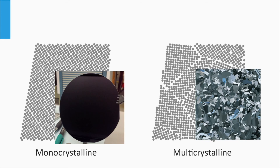Here you see two pictures of monocrystalline and multicrystalline wafers. The monocrystalline silicon wafer has one uniform color, whereas in multicrystalline silicon the various grains are clearly visible to the human eye. At the grain boundaries, we find lattice mismatches, and as a result many defects reside there. Consequently, the lifetime of charge carriers in polycrystalline silicon is shorter than in monocrystalline silicon due to Shockley-Read-Hall recombination. The more grain boundaries in the material, the shorter the lifetime of the charge carriers.